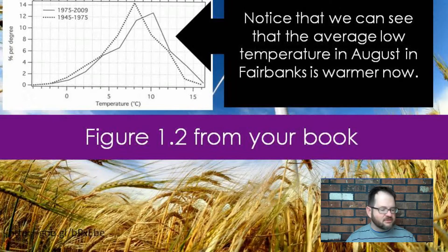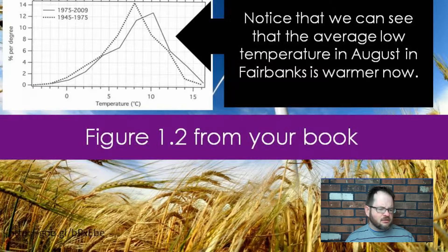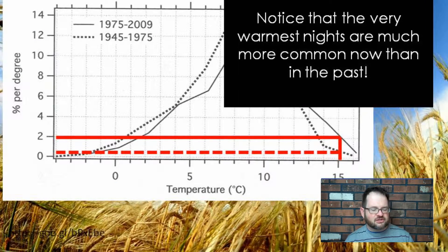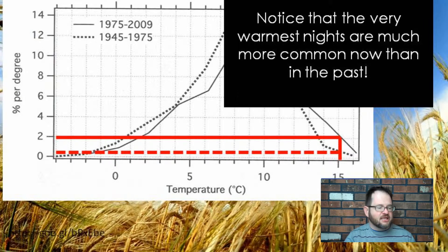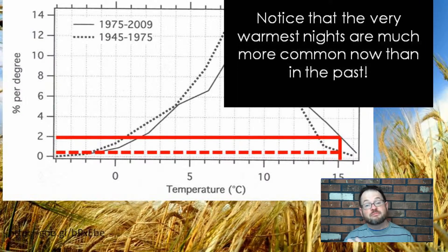Very warm temperatures like 15 degrees Celsius — about 60 degrees Fahrenheit — that's a very warm low temperature in Alaska. You can see those are much more common now than they used to be. If we look at 15 degrees Celsius on the dashed line, a low temperature that warm used to happen about half a percent of the time — almost never. On the other hand, in the later period shown by the solid curve, it happens something like 2% of the time. That's about four times as common as it used to be.